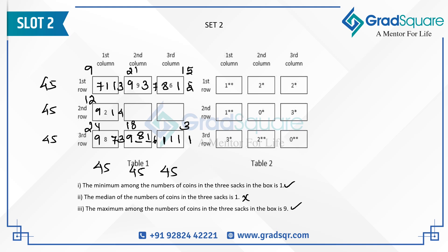With 42 coins accounted for in that column, the remaining box has a total of three and an average of one, so all three sacks must contain one coin. Another box totaling 39 leaves six for the next, giving an average of two. The box requiring a total of 27 must have an average of nine, so each sack contains nine coins. For the box with a total of six and zero sacks over five coins satisfying one condition, the minimum must be one, and the combination one, two, three gives the required total.